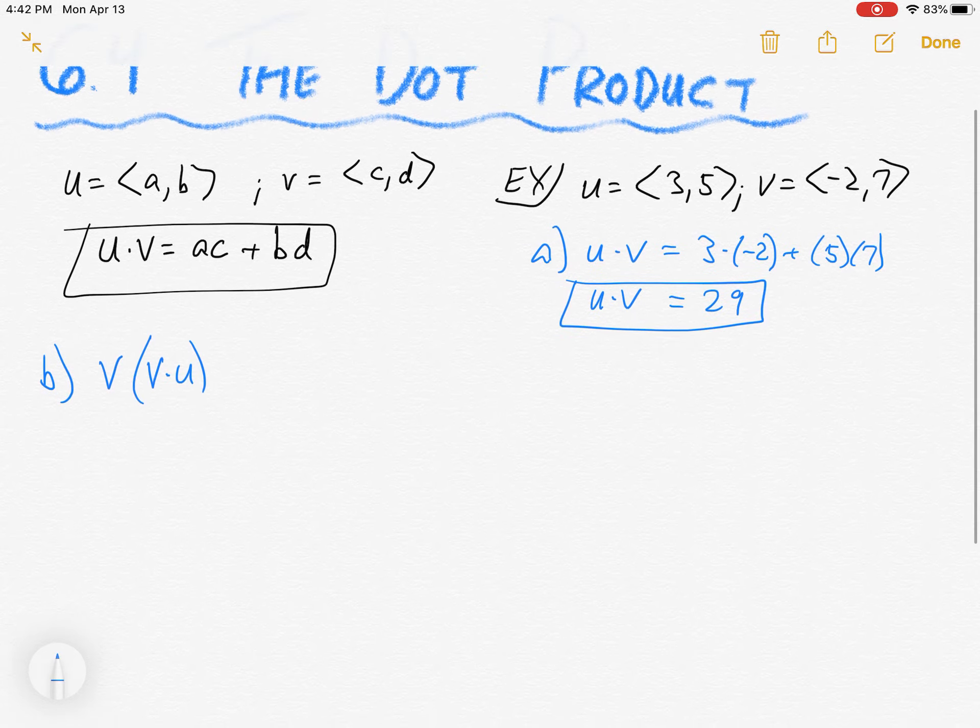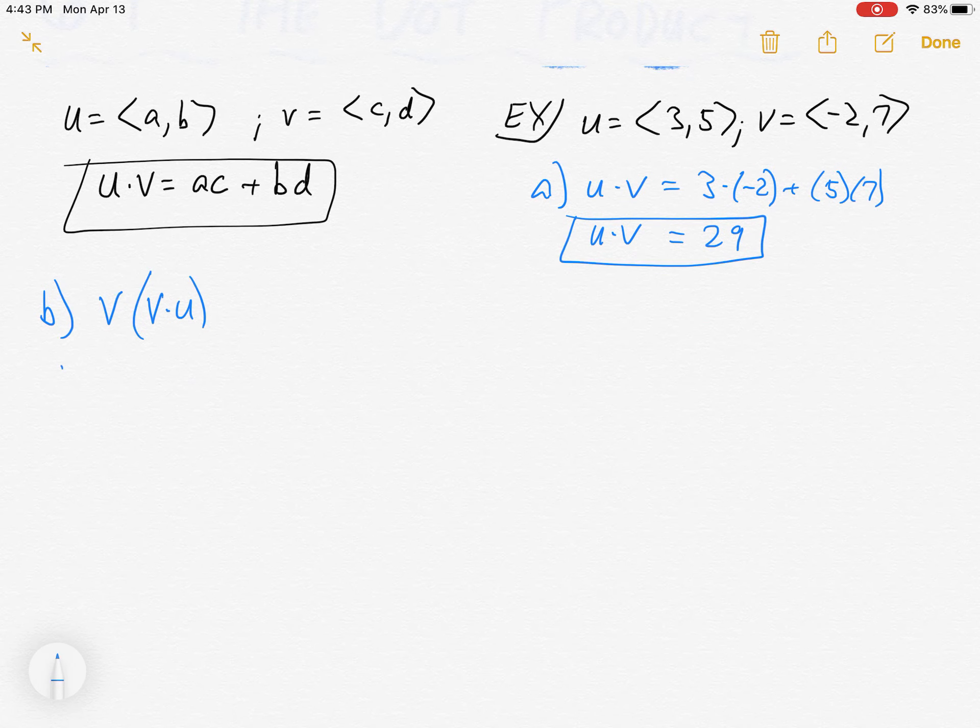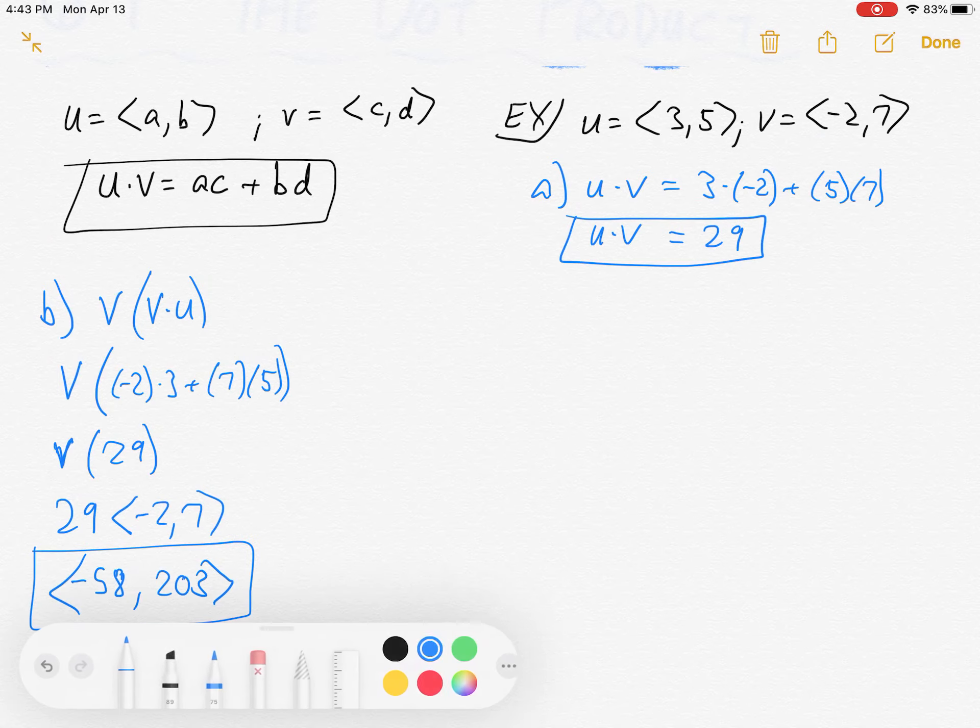Example b. What about v times v dot u? So let's just leave v here for a minute, and let's dot v and u together. So we've already done u dot v. Let's see what v dot u is. Well this would be negative 2 times 3 plus 7 times 5. And if you know about multiplication, you know it's not going to matter the order. This is going to be the same. It's going to be 29. So we have 29 v. Well now, this is multiplying a vector by a scalar. Let's put 29 first. 29 times negative 2, 7. In other words, negative 58, 203.